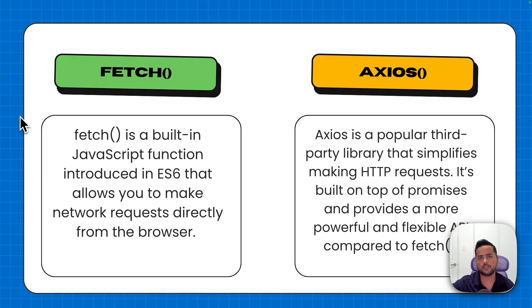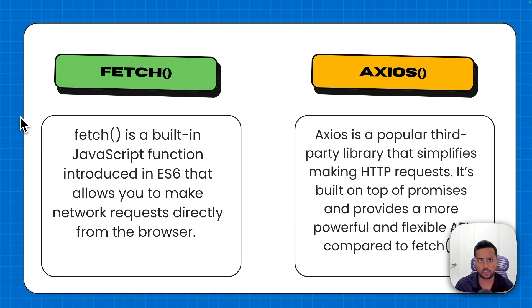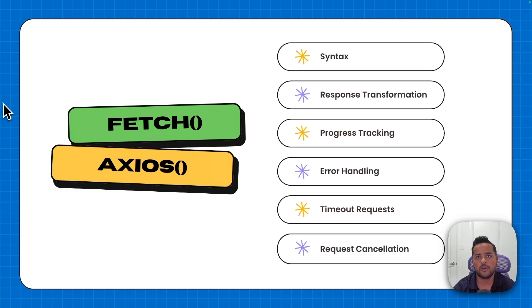Fetch is a built-in JavaScript function that allows you to make API calls and it's supported in pretty much all browsers, whereas axios is a third-party library that you will have to install in your project in order to use it. Axios comes with a lot of functionality out of the box, which is why it's quite popular in the developer community.